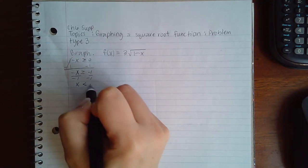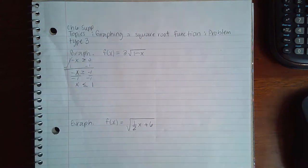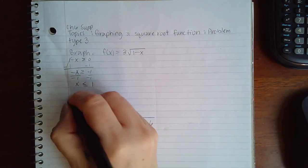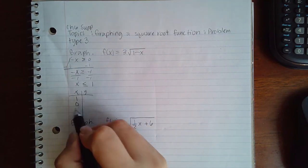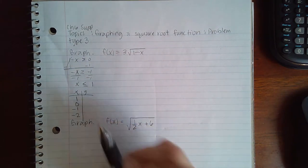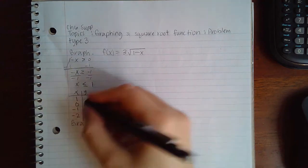I get x is less than or equal to 1, which means I actually have to use 1 and then values less than 1 like 0, negative 1, and negative 2.